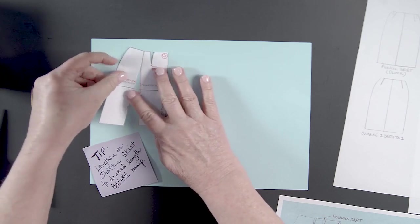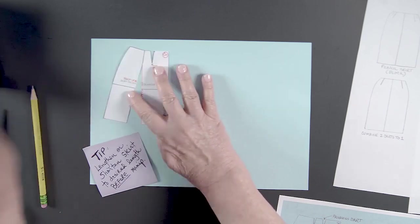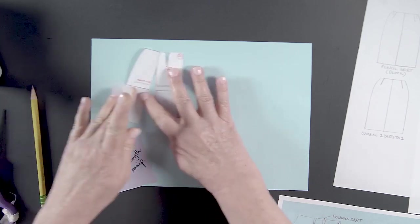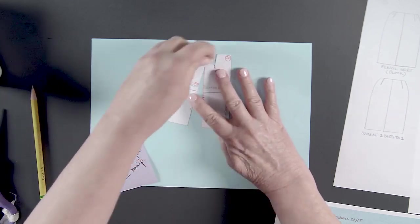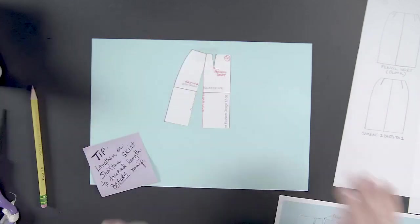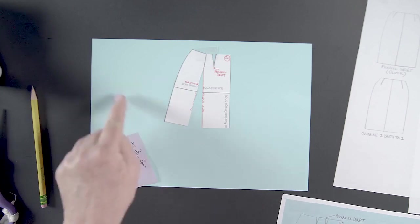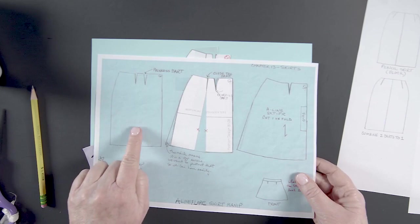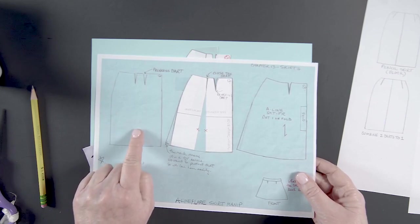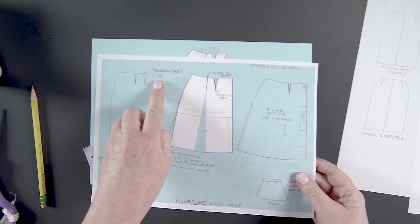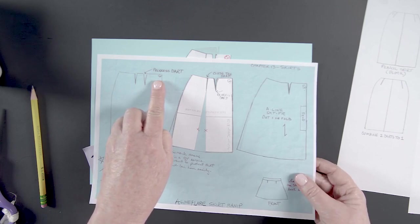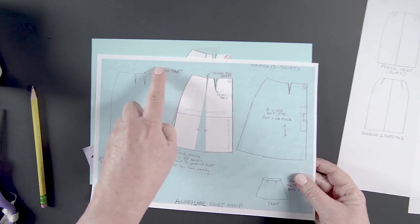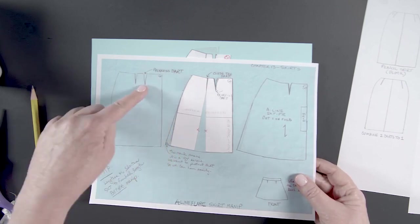Now we're going to tape this dart shut. Over here, I want you to trace the original starting point. So your template, trace that please. And then I'd like to see center front on all your work like I've always been talking about. And let's just identify this as the princess dart.